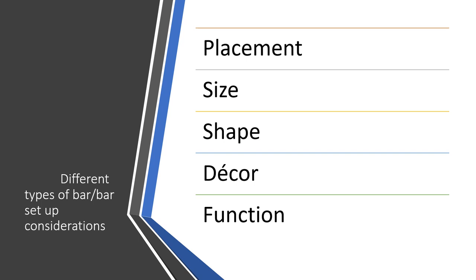Different types of bars require different sets of considerations: placement, size, shape, decor, and functions. The decoration of an entertainment bar differs from that of a coffee bar, and size and shape depend on the target market. The same applies to placement — a coffee shop goes where coffee is in demand, while entertainment bars are subject to policies and restricted areas. Some areas have many coffee bars depending on the businesses or establishments located in that area.